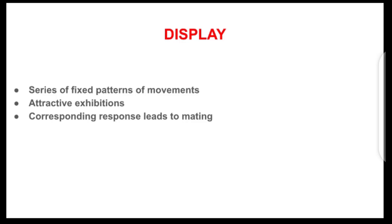Display is an elaborate process. This particular courtship behavior involves a series of fixed patterns of movement. In simple language, there are attractive exhibitions between mating partners, and each of these movements are in response to some actions of the partner, usually supposed to trigger some reaction from the other partner. Once there is a correct response to each other's display, the performance is going to end up in mating. So one partner displays, the other partner responds correctly, and then there will be the mating activity. Display involves attractive exhibitions and fixed patterns of movement.